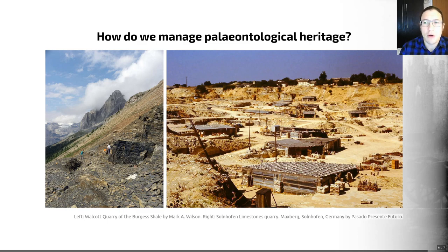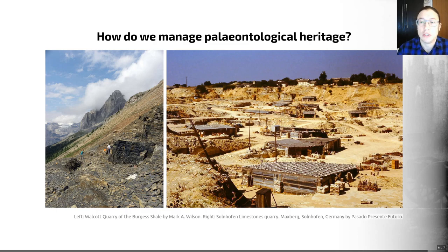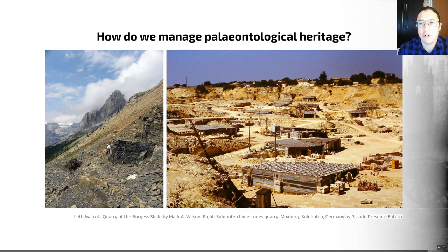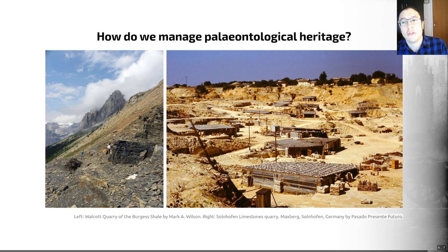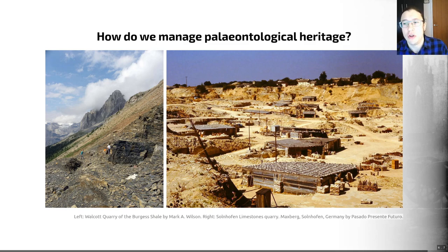But we need to think about sites of paleontological interest too — those where there's more than a single fossil. A paleontological site we could define as a particular location or a group of nearby occurrences in which fossils of any type and concentration are present. Not all fossil occurrences constitute paleontological heritage, just as not all the territory of a country can be declared geoheritage. So we have to have a framework by which we decide which sites and fossils are sufficiently important to be considered paleontological heritage, and there are three different groups of criteria that we use to do this today.